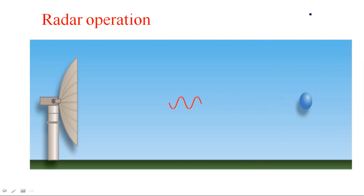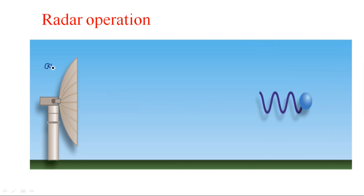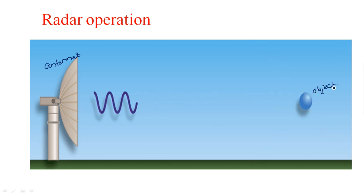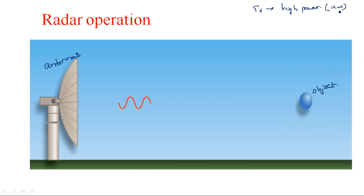Radar consists of a transmitting section used for emitting electromagnetic radiation. Let us see the basic operation through an animation. Here we have an antenna where the electromagnetic signal originates. The blue color line going from the antenna towards the object represents the transmitted signal. The spherical shape represents the object. The transmitted signal is a high power signal — in terms of kilowatts of power.